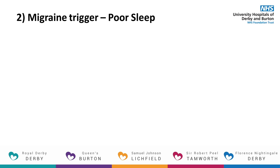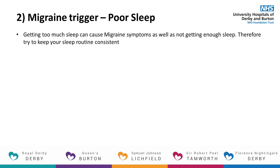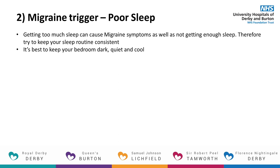Migraine trigger number 2: Poor sleep. People with migraine can reduce their symptoms by getting a more consistent night's sleep. It may seem strange that getting too much sleep can cause migraine symptoms as well as not getting enough sleep. Things to consider are: how do you use your bedroom? The bedroom is for sleeping only and best kept dark, quiet and cool.